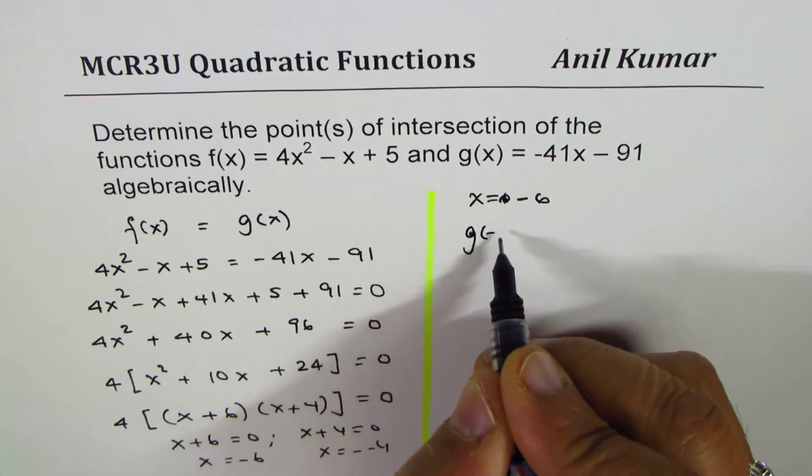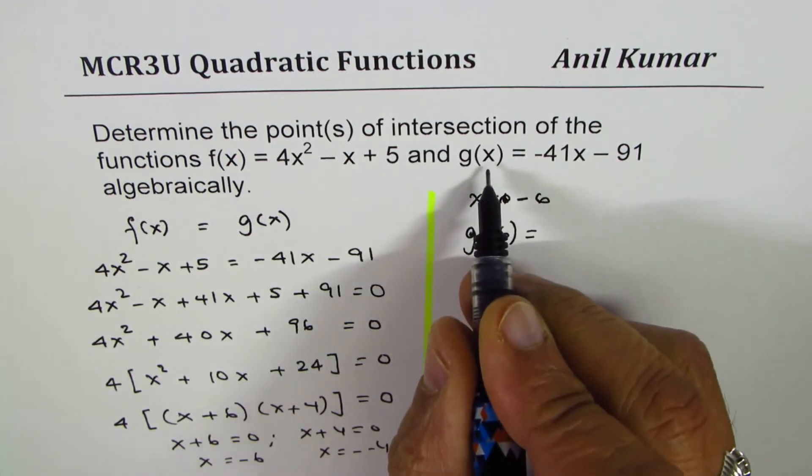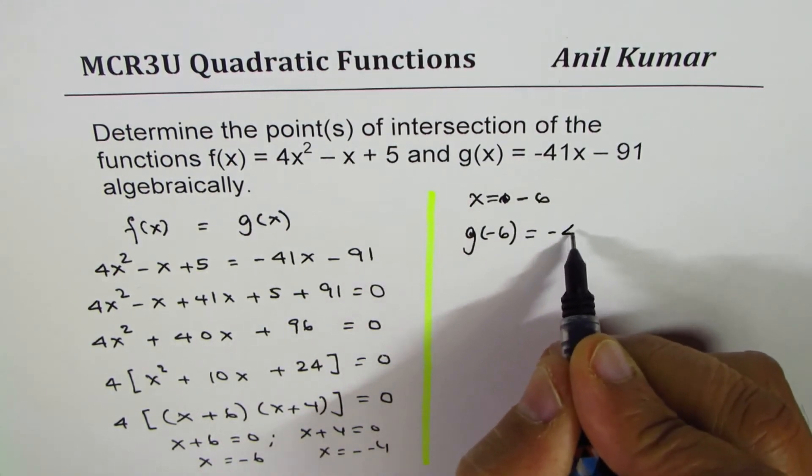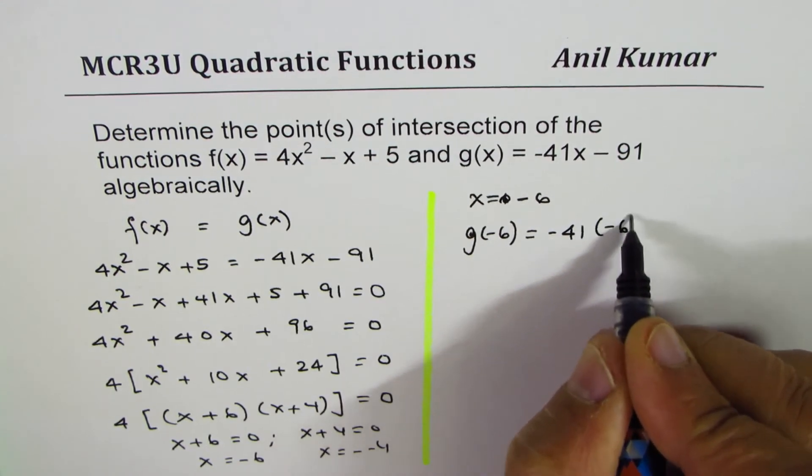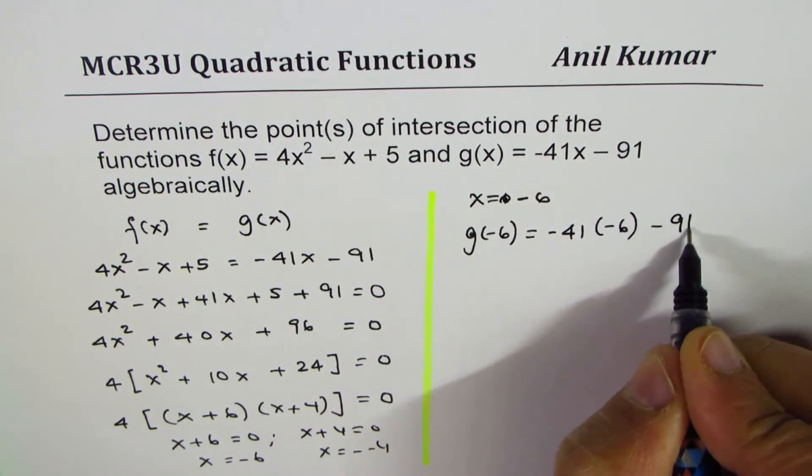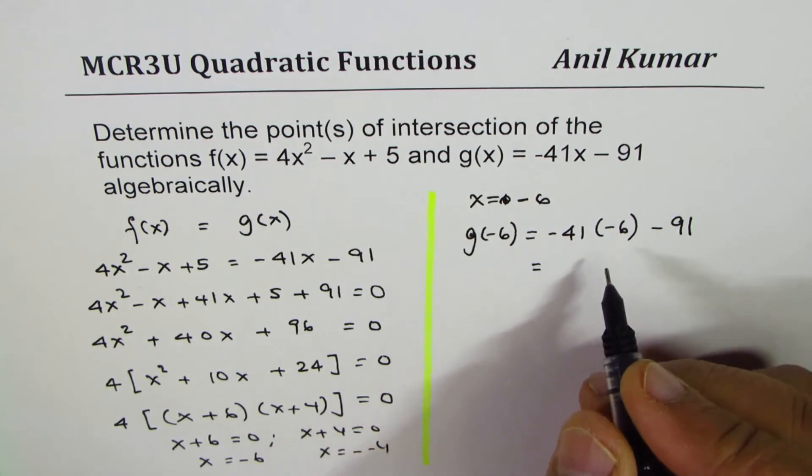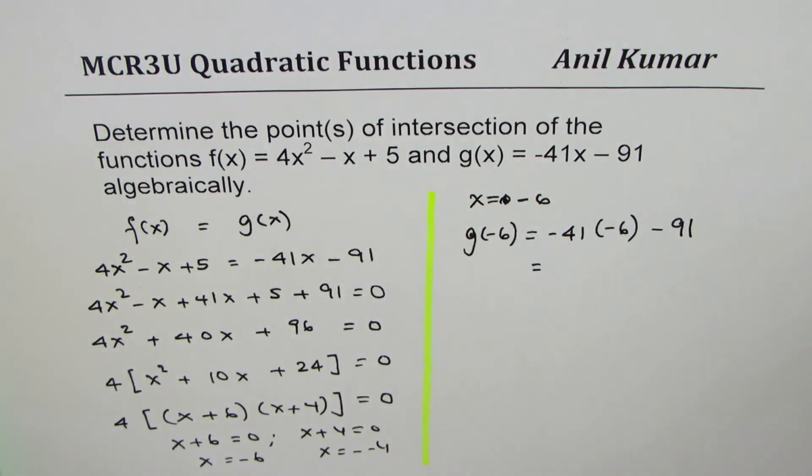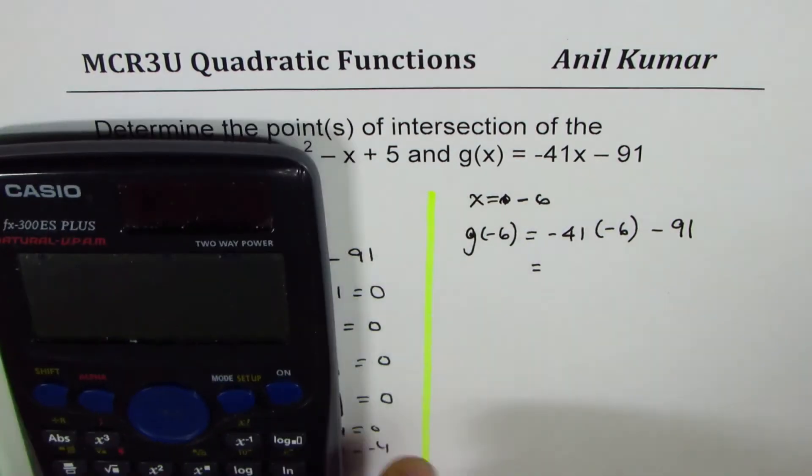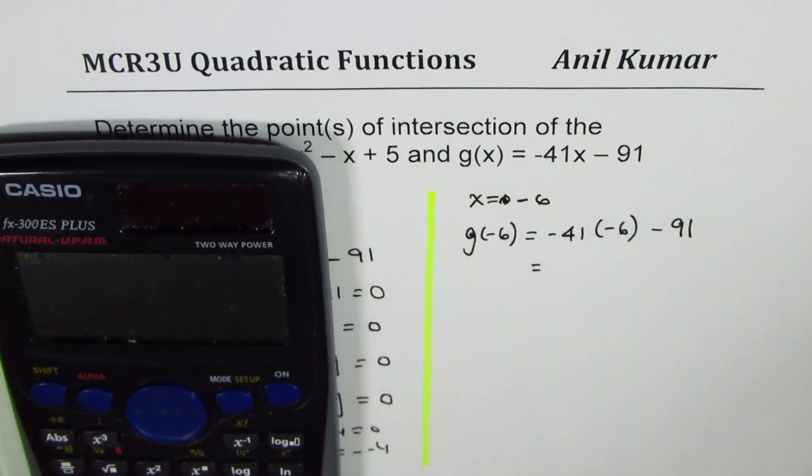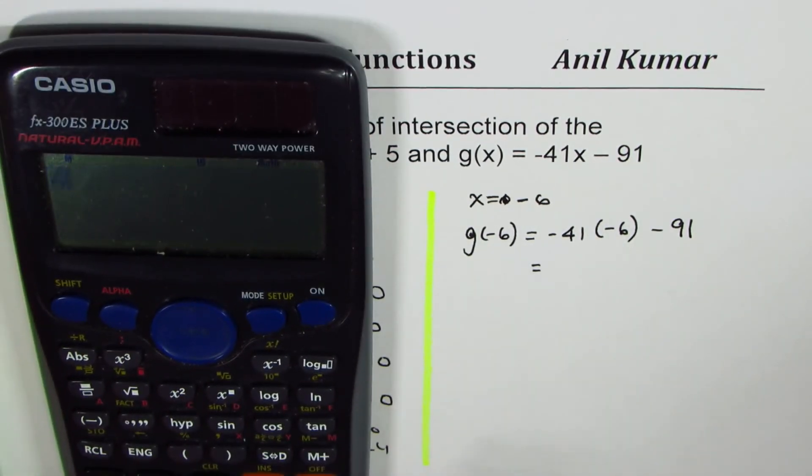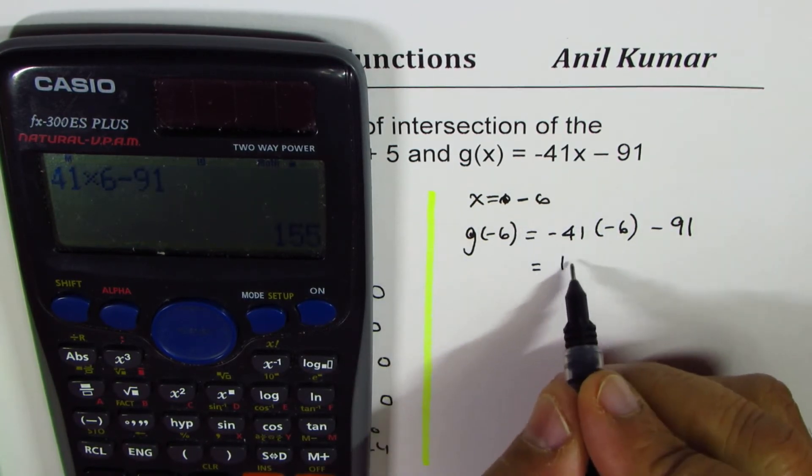we can find g(-6) = -41(-6) - 91. So that gives you, let's use calculator. Minus minus is positive. So I'll just do 41 × 6 and then take away 91.